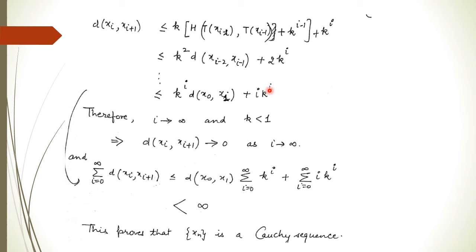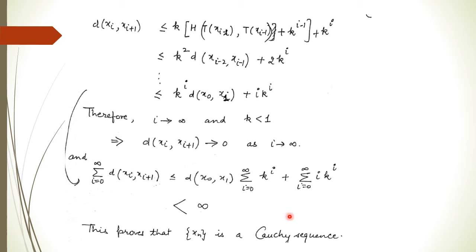Taking the summation on both sides, since k < 1, by the ratio test we can verify that both the series ∑kⁱ·d(x₀,x₁) and ∑i·kⁱ are convergent, so their values are finite. As i → ∞ the tail goes to zero, so the series ∑d(xₙ, xₙ₊₁) is convergent. This implies d(xₙ, xₘ) → 0 as n, m → ∞, so xₙ is a Cauchy sequence in m.